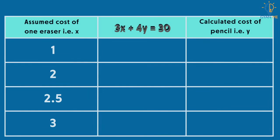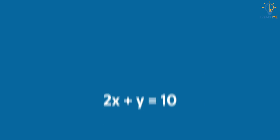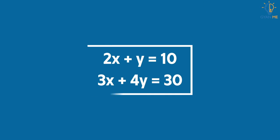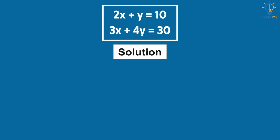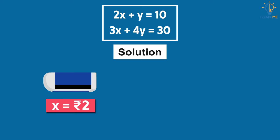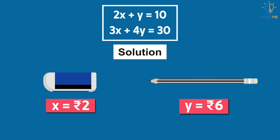If we consider the second equation independently, we will again get infinite solutions. To get a unique solution, we solve both equations together. Since we consider both equations at the same time, we also call them simultaneous equations. By solving both equations together, we get the cost of eraser as Rs. 2 and cost of pencil as Rs. 6.